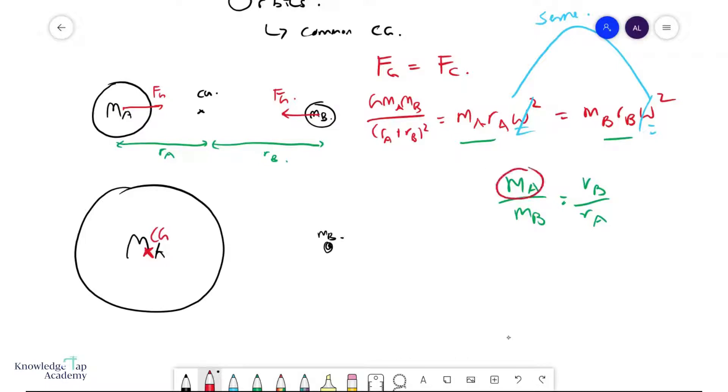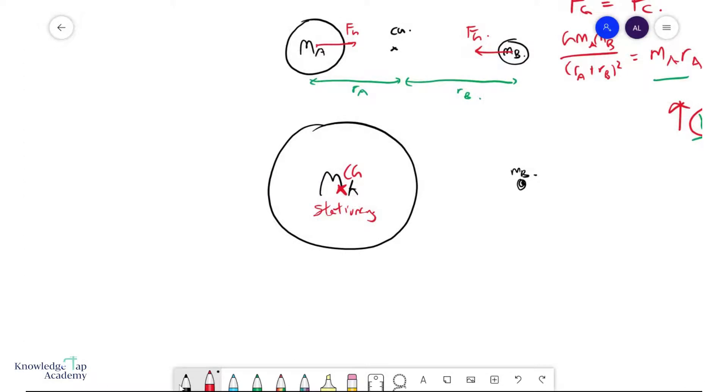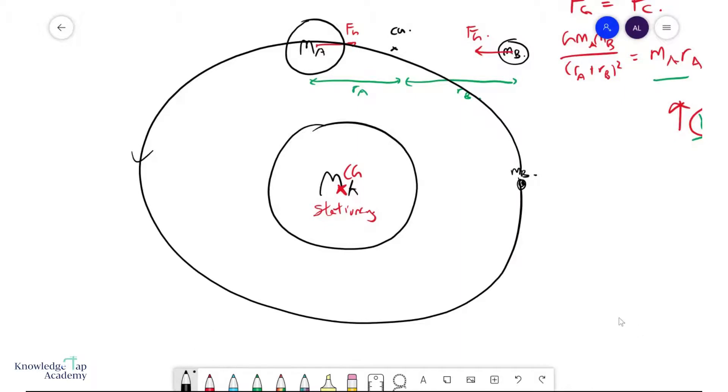So I have a very large ma, and that means your ra becomes very, very, very small, and so you can assume that the large mass is stationary. In other words, you have just one mass, the small one, orbiting the larger mass, and this makes our life a little bit easier to study.